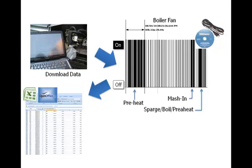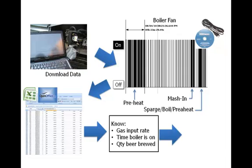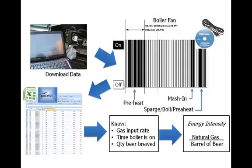After some data manipulation, which I'll go into in further detail later in this presentation, we were able to come up with some important pieces of information. We know the gas input rate because it's stamped on the side of the boiler. Looking at the data, we know the time that the boiler is on. We know how much beer is brewed based on production logs from the brewery. All this information can be combined to give us a very useful metric called the energy intensity — the amount of natural gas used for every barrel of beer produced.